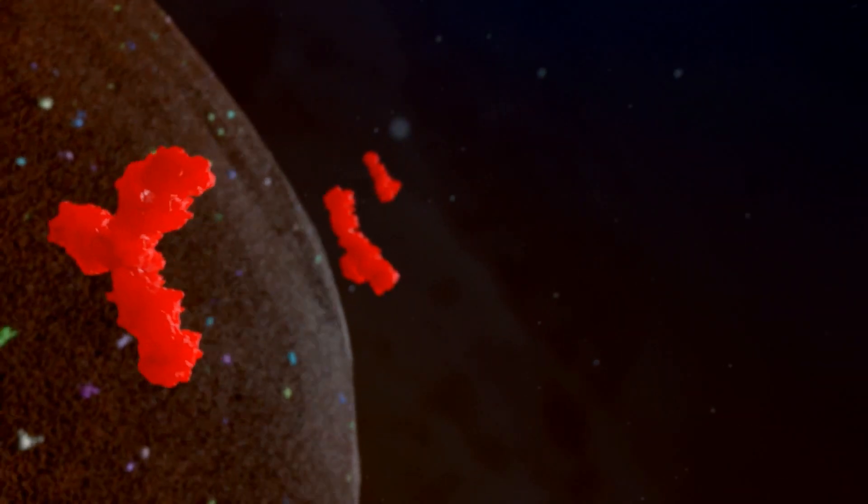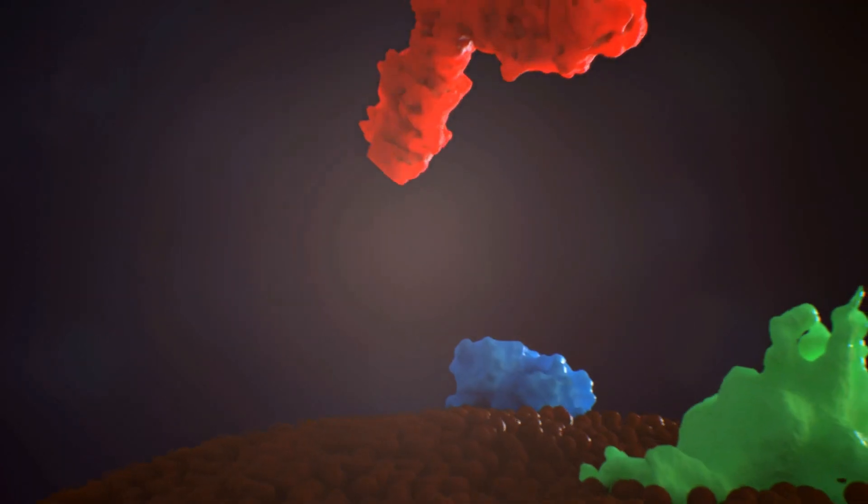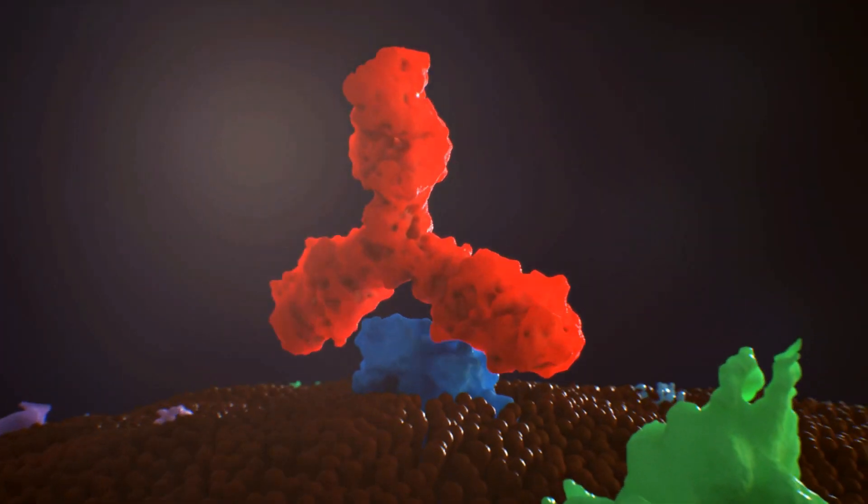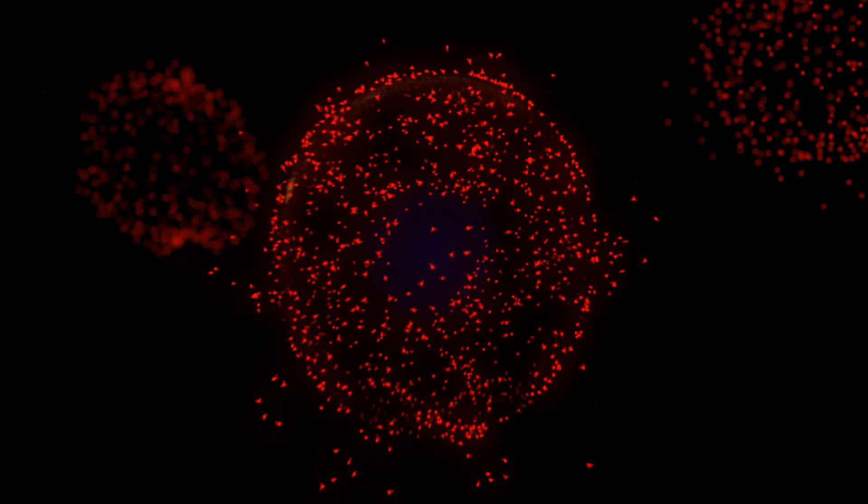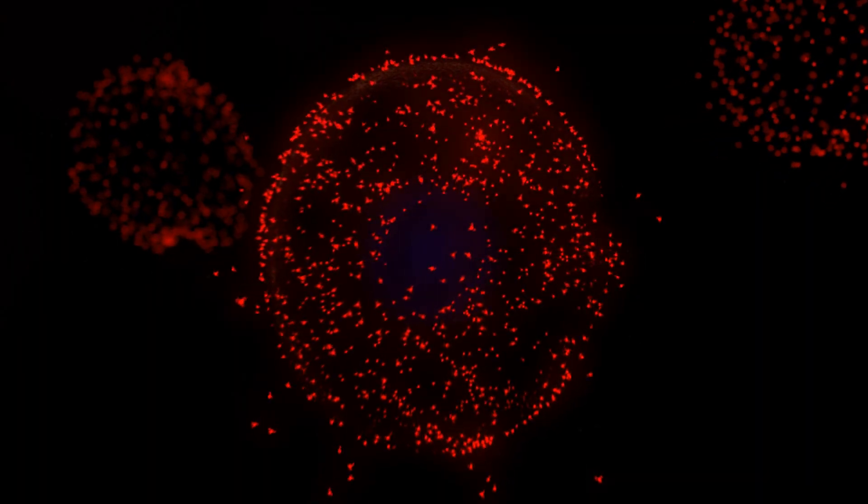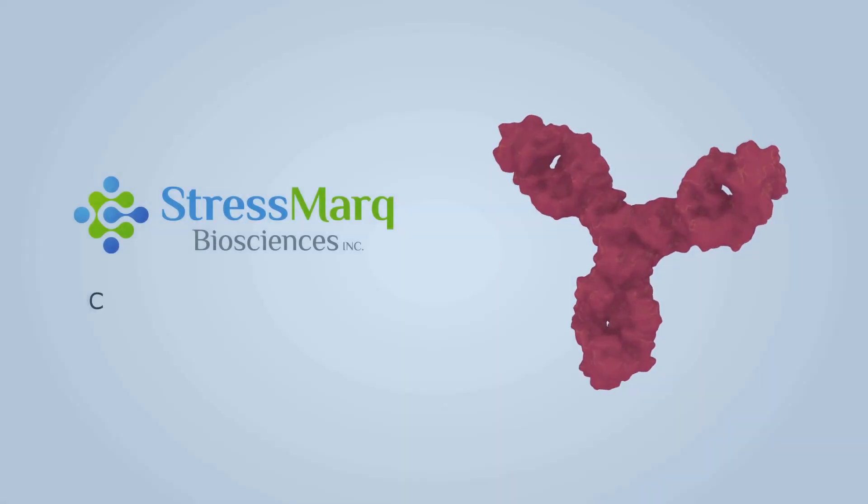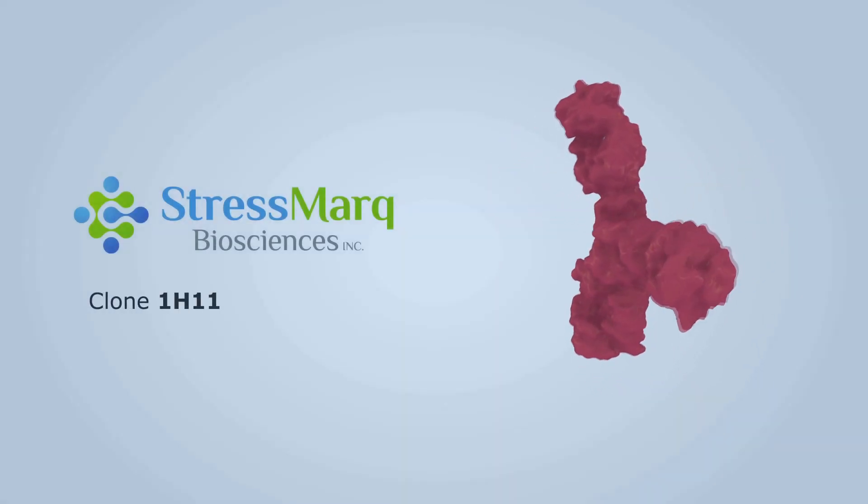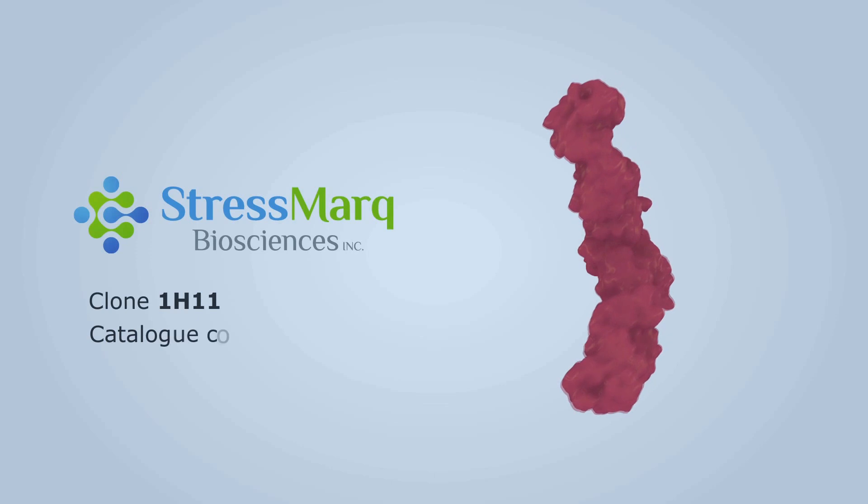A new antibody to Hsp70 depicted in red has been developed at StressMarq Biosciences. This unique antibody is able to bind the Hsp70 on the cell's surface, delivering the signal that the membrane-bound Hsp70 is present. This antibody, clone 1H11, catalog code SMC249, is available from StressMarq Biosciences.